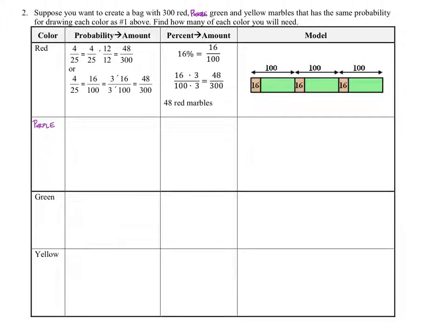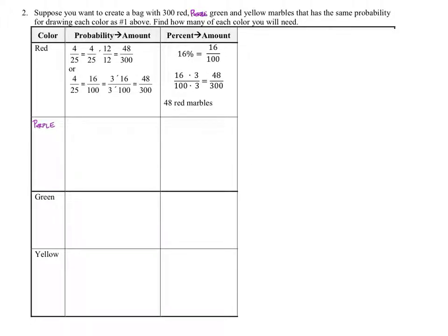Suppose you want to create a bag with 300 red, purple, green, and yellow marbles. That's all together, not 300 of each. That has the same probability for drawing each color as number one above. Find how many of each color you will need. So let's find the percentages for these first.